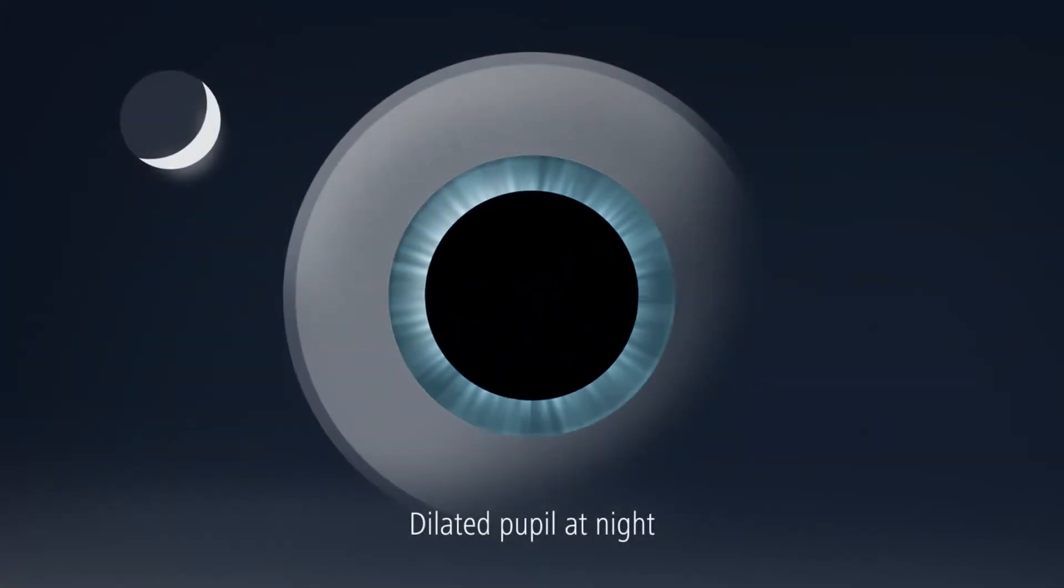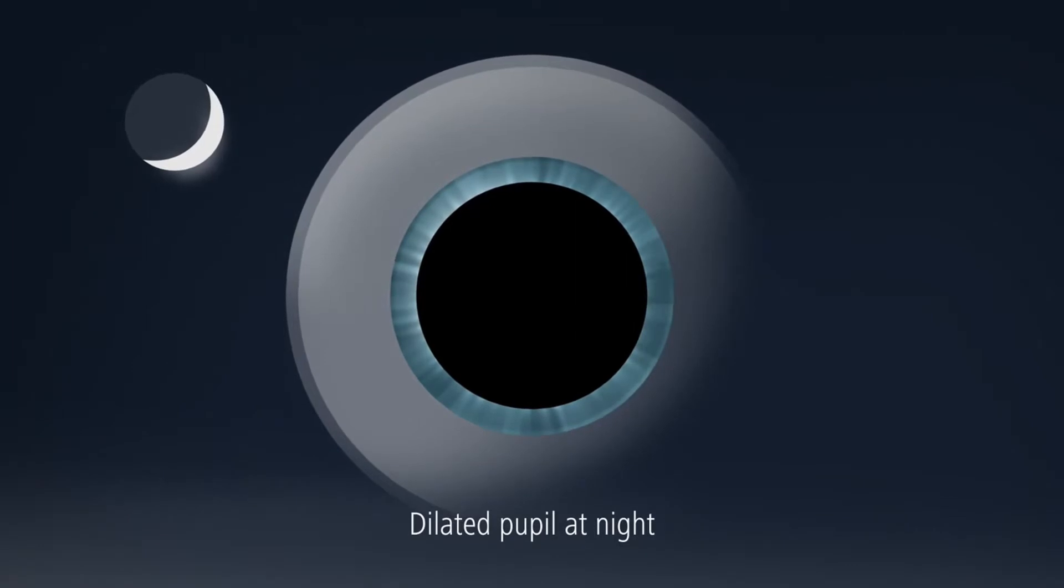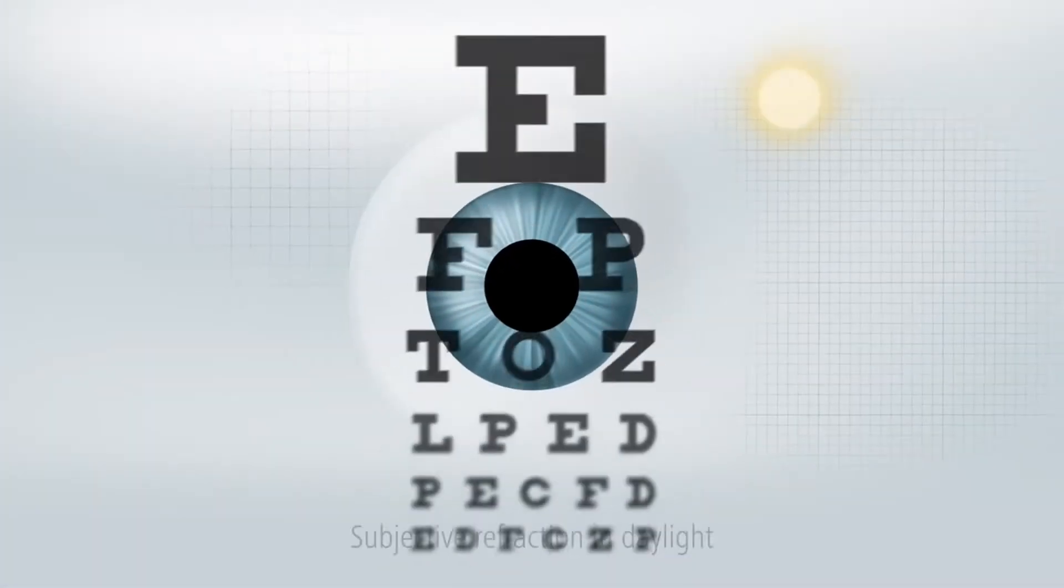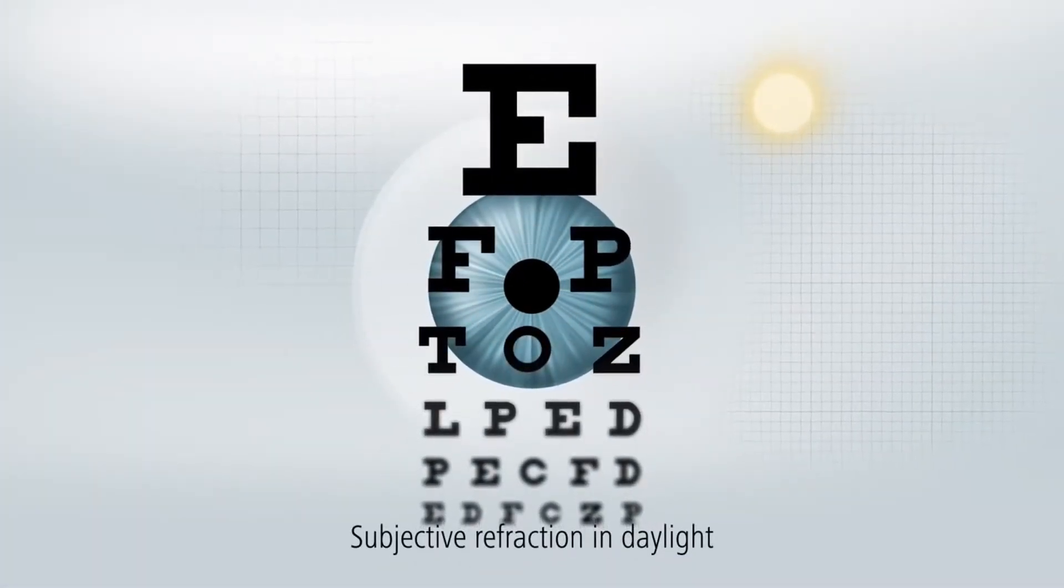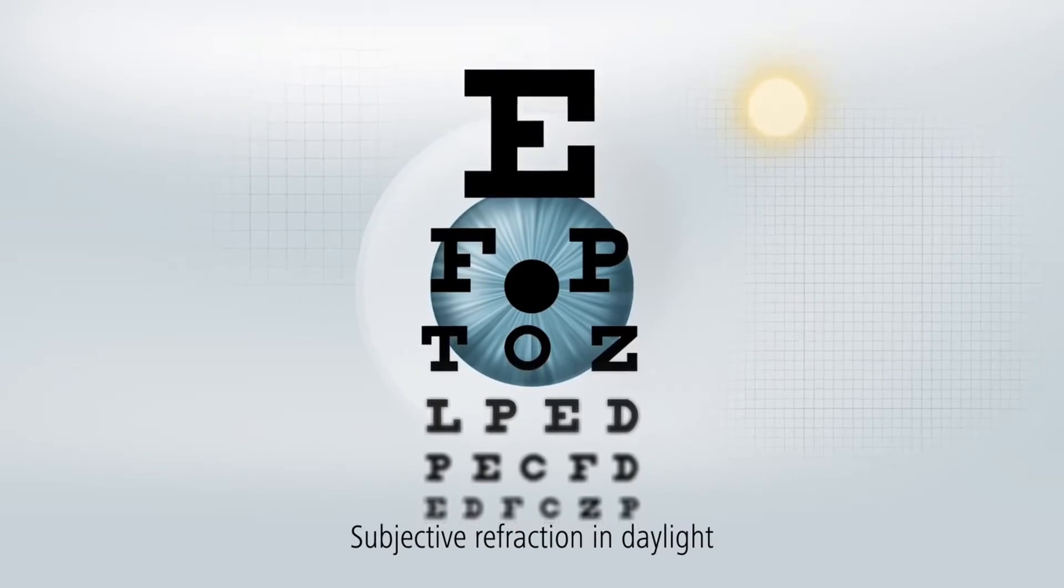At night, when there is less light, they dilate. A simple eye test, also known as subjective refraction, is conducted in daylight conditions.